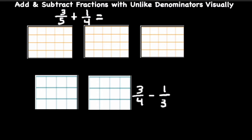Welcome to this section on adding and subtracting fractions with unlike denominators visually, using area models. The first thing you want to do is create area models based upon the denominators. For the addition problem, you can use 5×4s or 4×5s — it really doesn't matter. For the subtraction, you can use 4×3s or 3×4s.